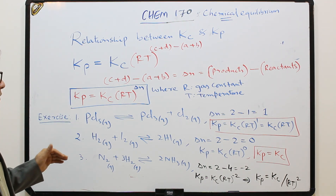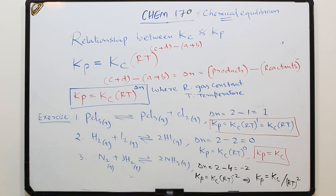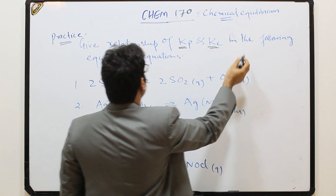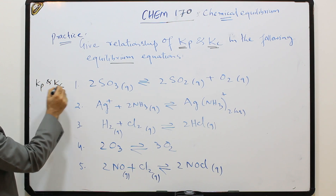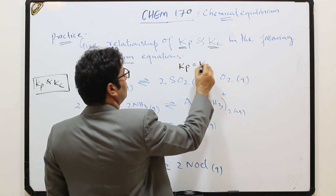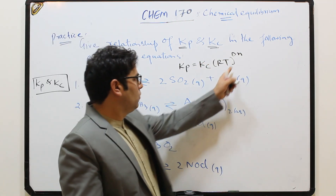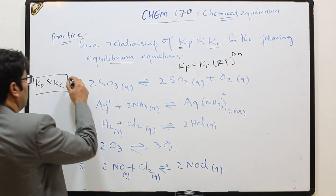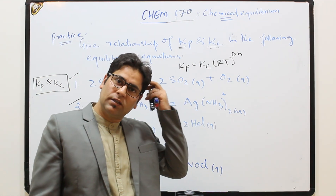These are some examples showing the relationship between Kp and Kc. Now, here are practice problems: give the relationship between Kp and Kc for the following equilibrium equations using Kp = Kc·(RT)^ΔN. The steps are: first calculate ΔN as products minus reactants, then apply the equation. There are five problems — this is homework. Do them and show me the answers. Thank you.